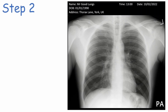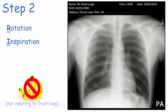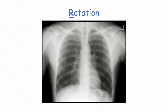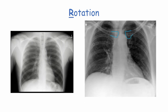Step two is to assess the image quality using the mnemonic RIPE: Rotation, Inspiration, Projection, Exposure. For rotation, this chest X-ray is not rotated and we can tell because the medial tip of each clavicle is equidistant from the spinous process. A non-rotated chest X-ray will also show all the vertebrae stacked neatly in a vertical line. If a patient's upper body is twisted or leaning, the chest X-ray will appear rotated, which can make the trachea appear deviated when it might not be.